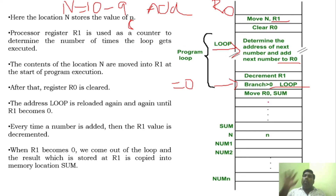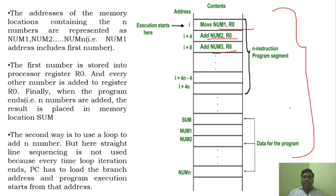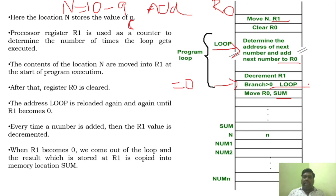So what happens is, whatever information is in R0, it will be transferred to sum. You can see — the add value is done, and the last time the R1 information is sent to sum. I will explain it very clearly again.